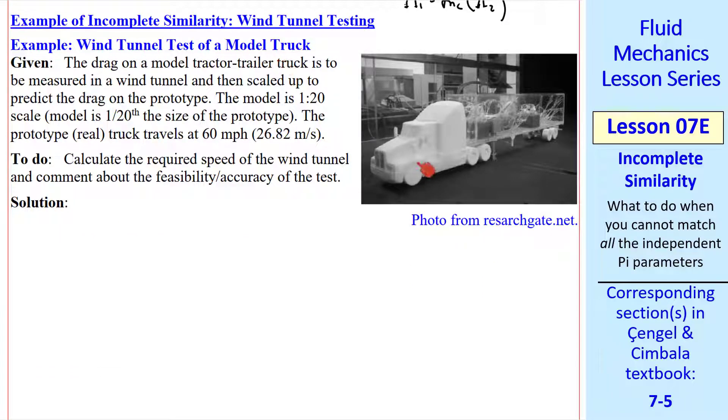Here's an example of that type: wind tunnel test of a model truck. Suppose the drag on the model truck is to be measured in a wind tunnel and scaled up to predict the drag on the prototype. The model is 1/20th scale, which means it's 1/20th the size of the prototype. The real truck, the prototype, travels at 60 miles per hour or 26.82 meters per second.